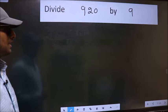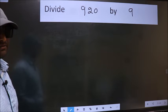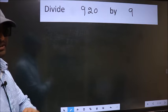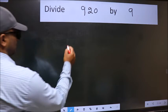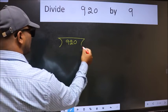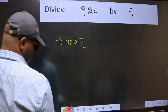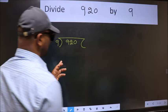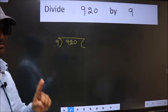Divide 9.20 by 9. To do this division, we should frame it in this way. 9.20 here and 9 here. This is your step 1.